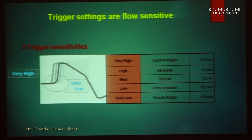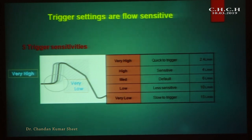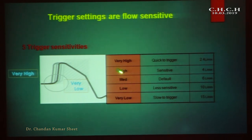We can set trigger sensitivity at five levels: very high, high, medium, low, and very low. At very high trigger sensitivity, the flow required is very low — only 2.4 to 5 liters per minute. At very low trigger sensitivity, the required flow is very high. Patient movement, tube movement, or slight coughing may generate enough flow to trigger the ventilator, leading to asynchrony. By default, trigger sensitivity should be set to medium, which is 6 liters per minute.